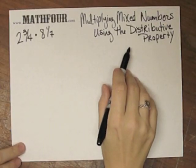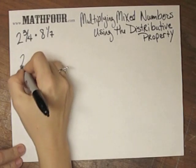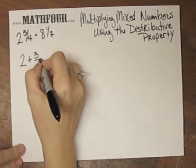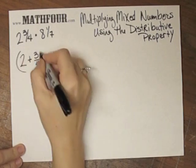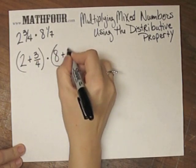We can try the same problem and use the distributive property. 2 and 3 fourths actually means 2 plus 3 fourths. That's why we use the little word 'and' in there. And 8 and 1 seventh means 8 plus 1 seventh.